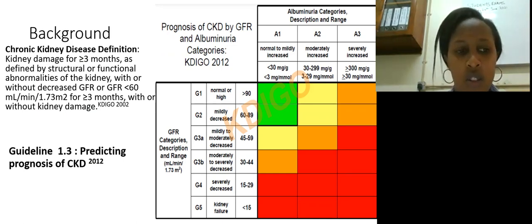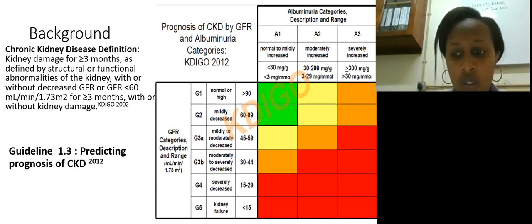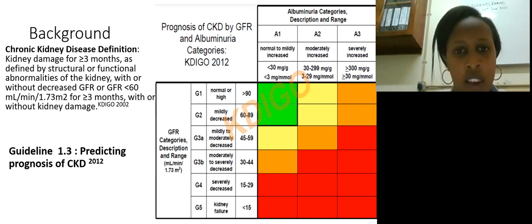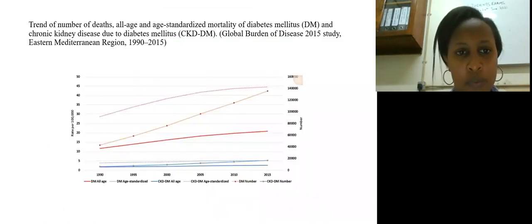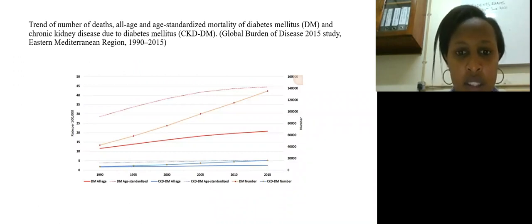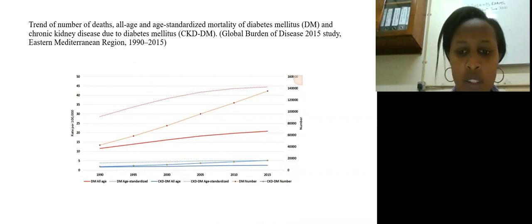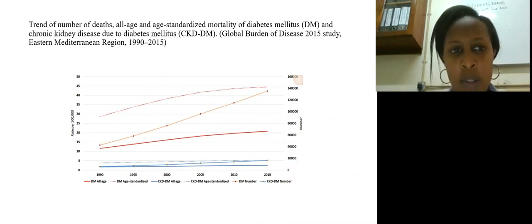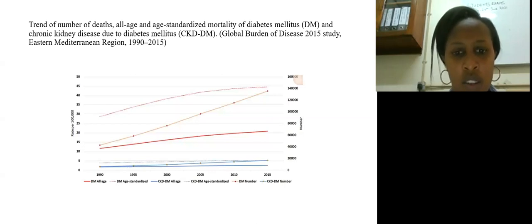The idea is that you should catch a patient in the early stage — when they're in the green area — before they move on to the red area, because the red area represents end-stage kidney disease, and at that point options of care are very limited and often inaccessible. Kidney disease and diabetes contribute significantly to mortality. Patients who have both usually will not do well, so it's always very important to try to delay progression as much as you can.